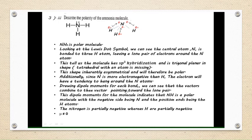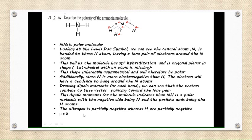The dipole moment vectors for each bond combine to give a resultant vector pointing toward the lone pair. This net dipole moment indicates that NH3 is a polar molecule, with the negative side being N (partially negative) and the positive side being H (partially positive).